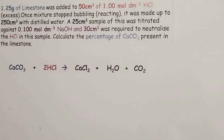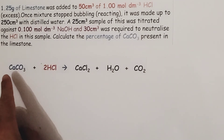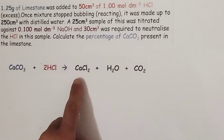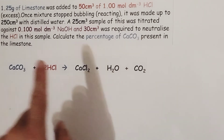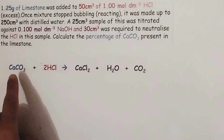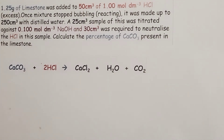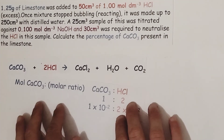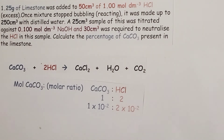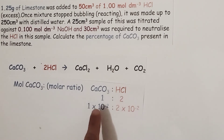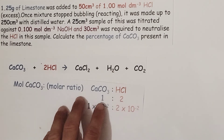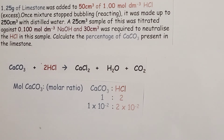We've now gathered enough information to look at the calcium carbonate directly. The reaction between calcium carbonate and hydrochloric acid is in a 2-to-1 ratio, forming calcium chloride, carbon dioxide and water. So for every 2 moles of hydrochloric acid, it reacts with 1 mole of calcium carbonate. Since we had 2 × 10⁻² moles of hydrochloric acid directly reacting with the calcium carbonate in the first reaction, following that 2-to-1 ratio, only 1 × 10⁻² moles of calcium carbonate was actually reacting from the limestone.